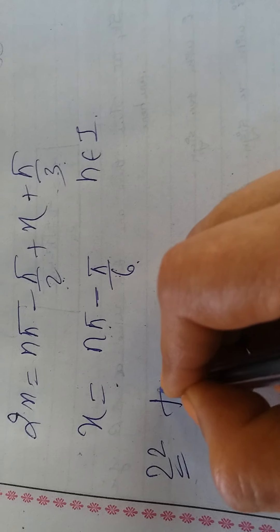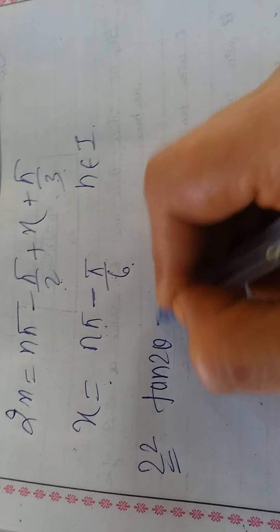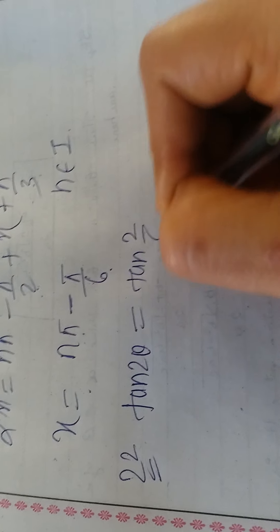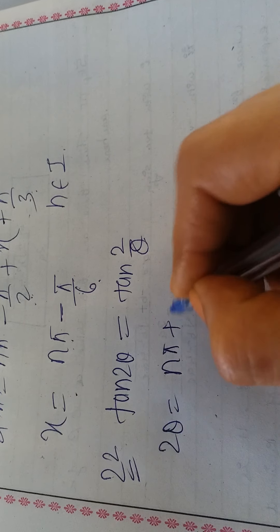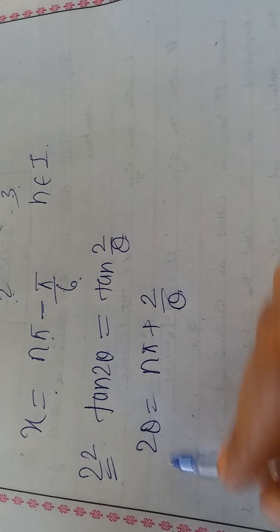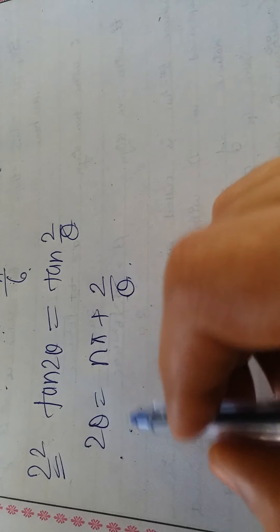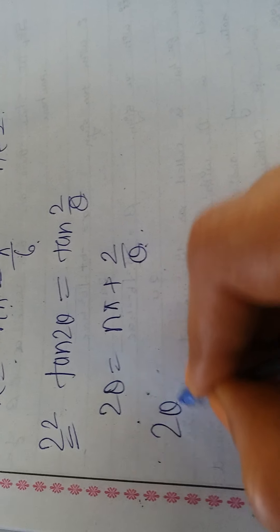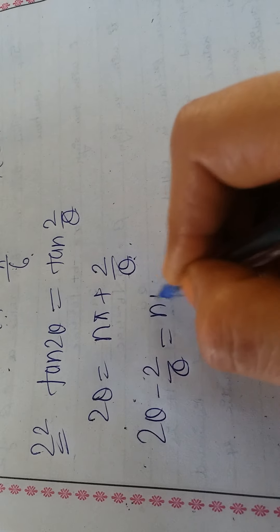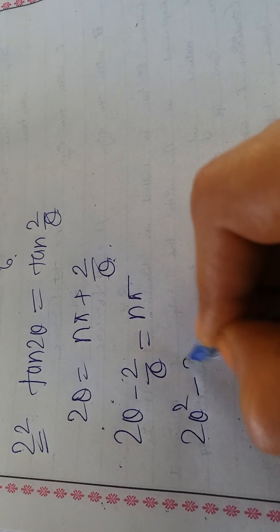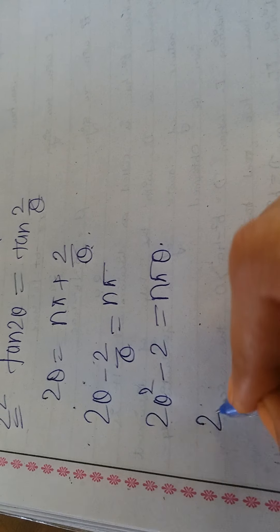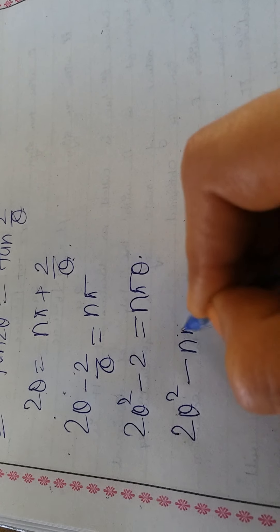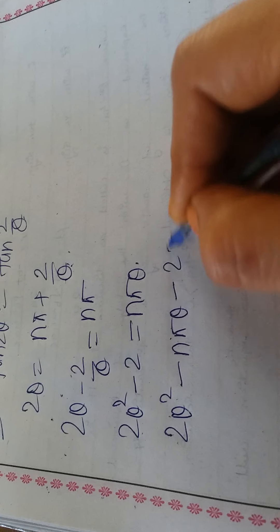Question 22: tan(2θ) = tan(2/θ). Applying tan(θ) = tan(α) ⟹ θ = nπ + α: 2θ = nπ + 2/θ. Since we cannot express θ in terms of θ directly, shift 2/θ: 2θ - 2/θ = nπ. Taking LCM: 2θ² - 2 = nπθ, which forms a quadratic.